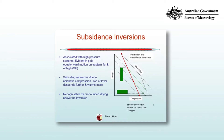Subsidence inversions are associated with high pressure systems because in the southern hemisphere, on the eastern flank, there is significant pole-to-equator motion, and that's associated with subsidence. As well as the pronounced warming, there's also a pronounced drying, because as the air subsides it advects down drier air from further up in the atmosphere.